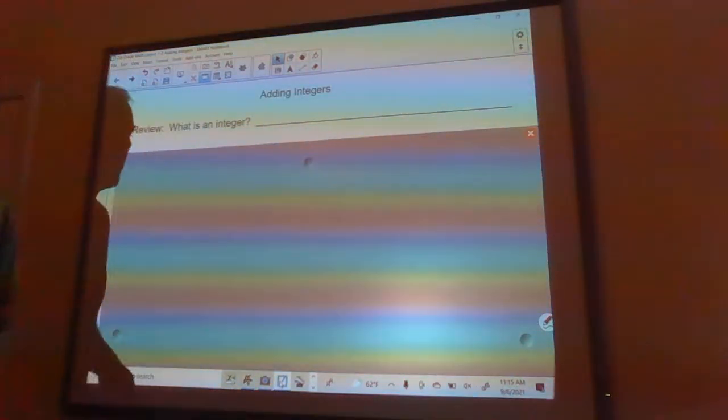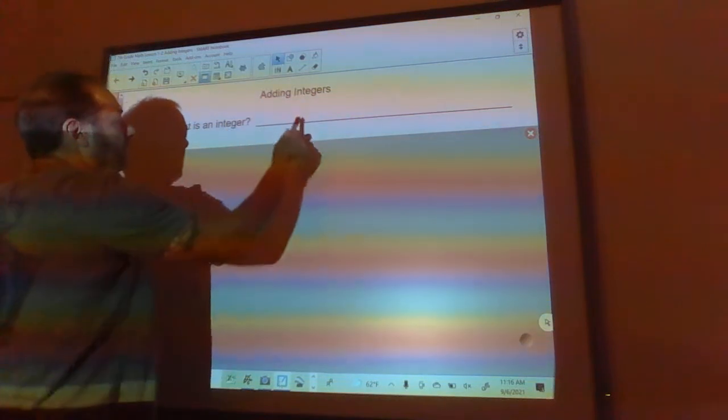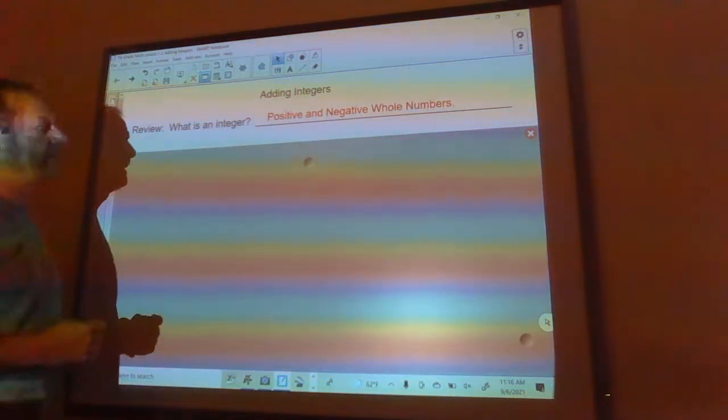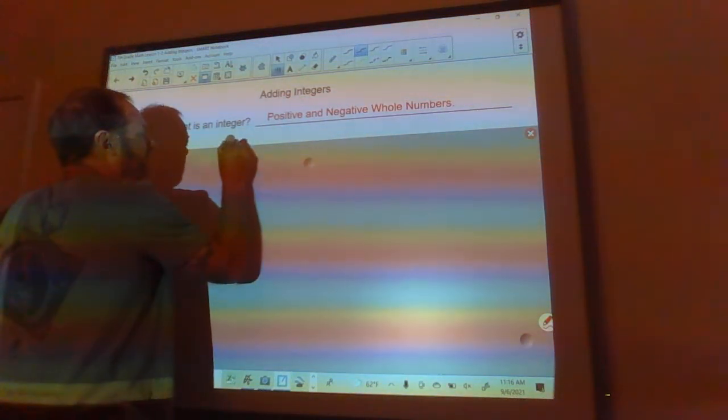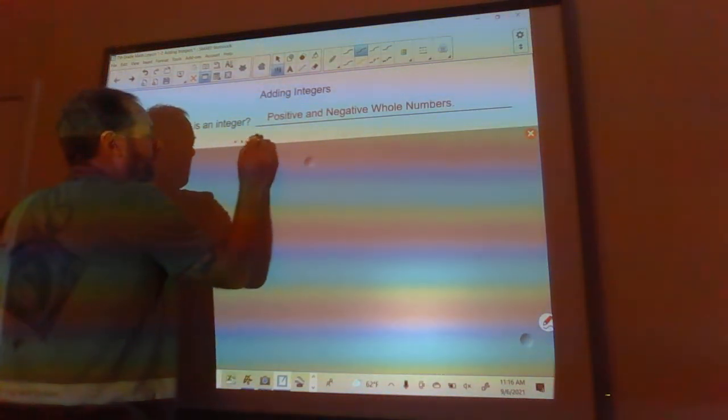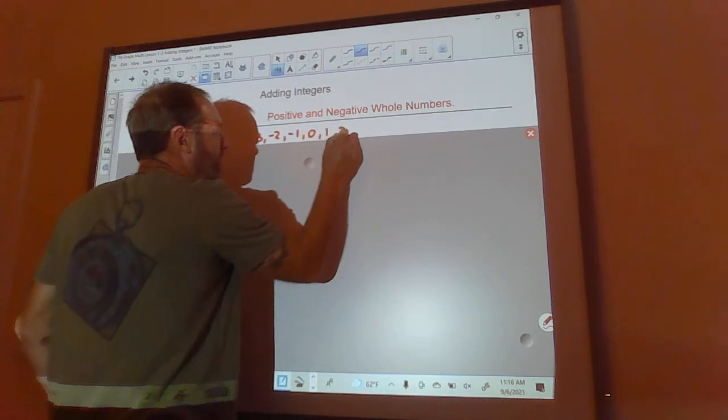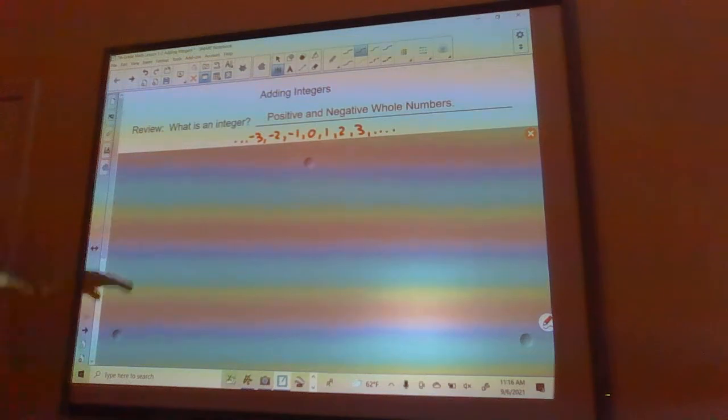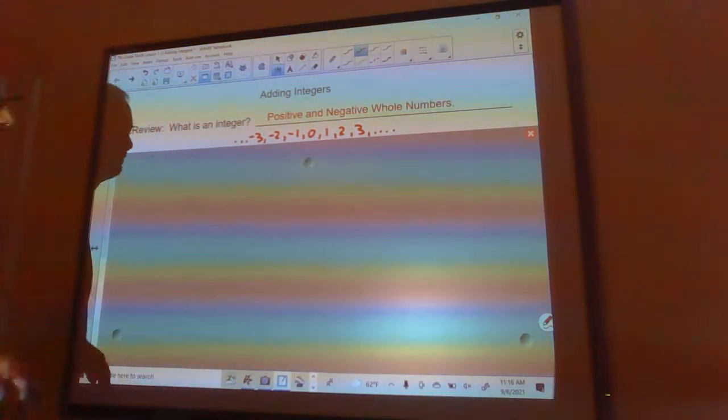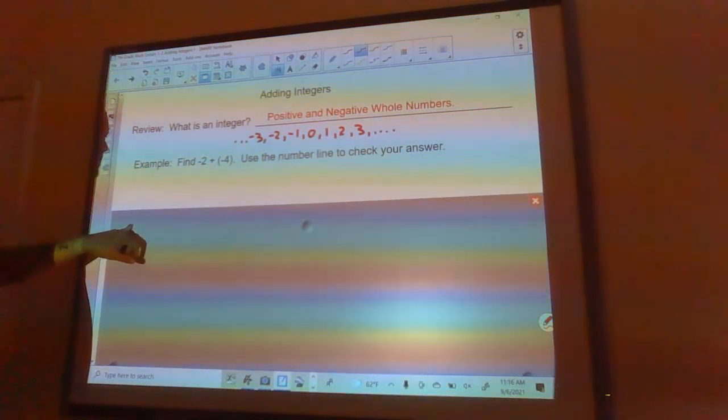Good morning everybody, today we're going to talk about adding integers together. So we got a review from last time. What is an integer? An integer is simply the positive and negative whole numbers. So you're talking everything from negative infinity down to negative 3, negative 2, negative 1, 0, 1, 2, 3, and up to positive infinity.